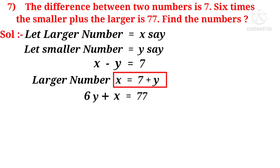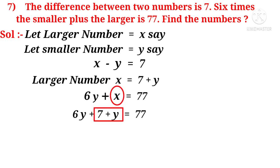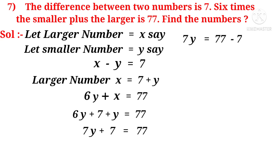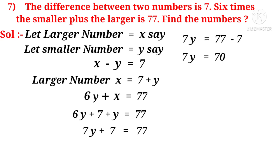Now, X is equal to 7 plus Y. Write 7 plus Y in place of X in the equation. Then, we get 6Y plus 7 plus Y equals 77. Now, 7Y plus 7 equals 77, because 6Y plus Y equals 7Y. Now, 7Y is equal to 77 minus 7, because plus 7 transposed to the right hand side becomes minus 7. So, 7Y is equal to 70, because 77 minus 7 is 70.